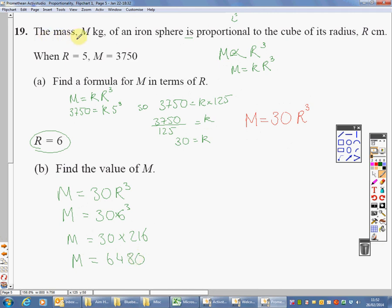And that gives you an answer of M equals 6480. Now, mass in kilograms of an iron sphere, radius in centimeters. Don't forget to put your units in. That sounds incredibly heavy. But, 5 centimeters was 3750. Do you know what? I think it should have been in grams. I can't believe that a 5 centimeter sphere of iron really weighs 3 tons. They've got that question wrong. That should be in grams, I'm sure of it. I'm not quite sure about that. I'm not sure they thought carefully about their units there in terms of the realisticness of it. Anyway, that's by the by. It said it was in kilograms, so we've got to give it in kilograms.